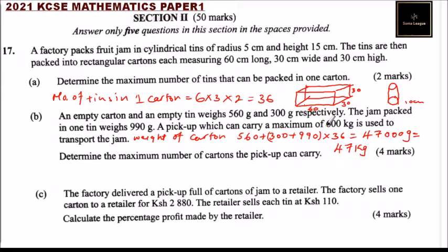Since the pickup can carry 600 kg and we have seen that one carton weighs 47 kg, the number of cartons in a pickup equals 600 divided by 47, which gives you approximately 12.7659 cartons. Because they are not packing half cartons, the pickup will be able to carry 12 cartons.